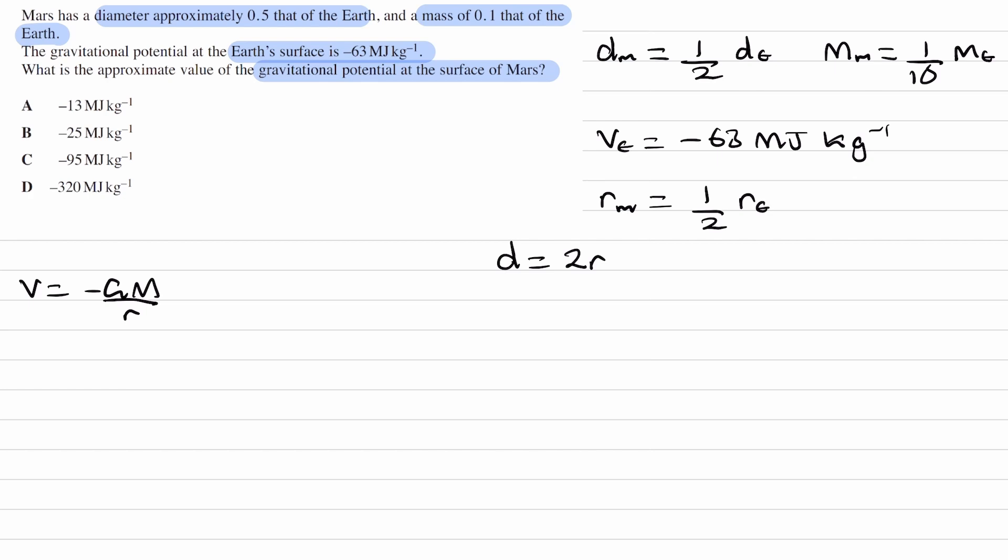We can use this equation with what we have here. Replacing that last equation with a proportionality, V is proportional to M over r. G is just a constant, so we can remove that from our proportionality.